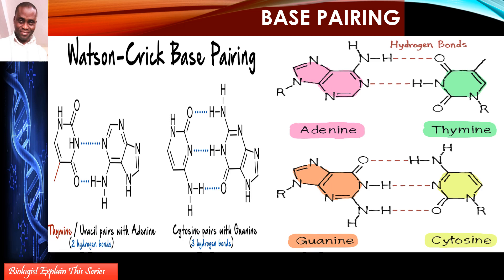Another way of presenting the base pairing: two hydrogen bonds between A-T pairing (or A-U in RNA), and three hydrogen bonds between cytosine and guanine. The hydrogen bonds are represented in blue in the diagram.